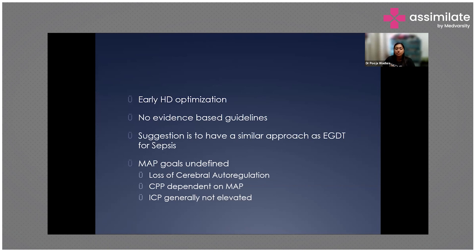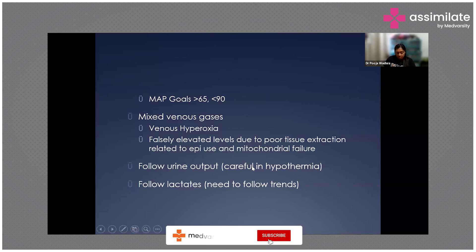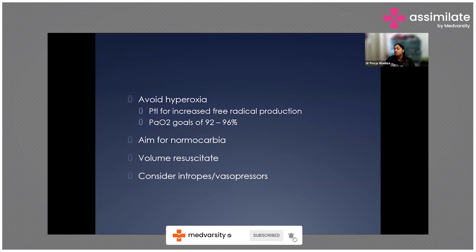If ICP is high, you have to maintain MAP at a higher level to maintain cerebral perfusion pressure, although ICP is generally not elevated. MAP goals are usually kept between more than 65 and less than 90 mmHg. For monitoring, mixed venous gases may show falsely elevated levels due to poor tissue extraction from epinephrine use and mitochondrial failure, so follow urine output and lactate trends — not a single value, but whether lactates are increasing or decreasing.